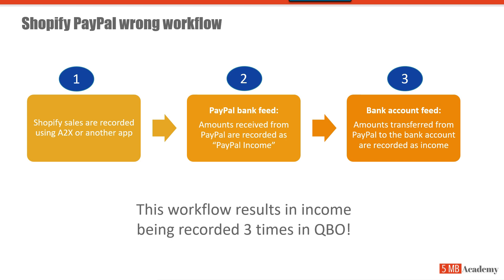But if you don't understand the proper way of recording Shopify income and PayPal transactions, typically what we see is that untrained users are recording income three times in QuickBooks. First, Shopify sales are recorded into QuickBooks using A2X or another app. Then in the PayPal bank feed in QuickBooks, amounts received from PayPal are recorded as PayPal income — so that's income recorded twice. And then a third time in the bank account feed, amounts transferred from PayPal to the bank account are recorded as income once again.